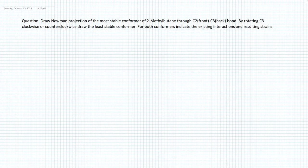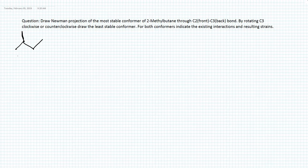In order to solve this question, we need to draw a skeletal structure of 2-methylbutane. In butane we have 4 carbons. We draw the first, second, third, and fourth carbon. We also have a methyl group at the second position. Let's number the carbons: 1, 2, 3, and 4.